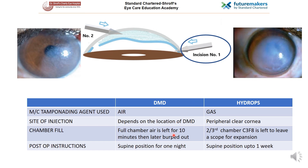In DMD, full chamber air is left for 10 minutes and later it is burped out. Short-term tamponade is mostly effective, and then when the endothelium is functional, the endothelial pump takes over. In hydrops, two-thirds chamber C3F8 is left to allow scope for expansion. Post-operatively in DMD, supine position is to be maintained for one night, but in hydrops the patient is asked to maintain supine position for up to one week.